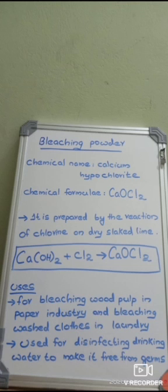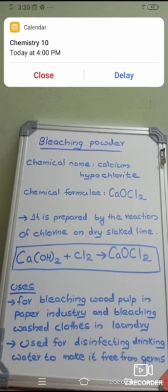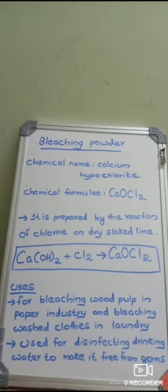It is prepared by the reaction of chlorine on dry slaked lime, that is calcium hydroxide. When calcium hydroxide is treated with chlorine, we get calcium hypochlorite or bleaching powder. It is used for bleaching wood pulp in the paper industry and for bleaching washed clothes in laundries.